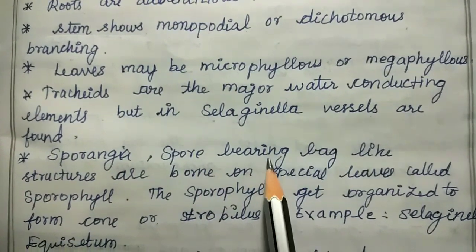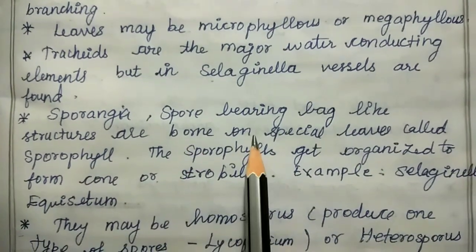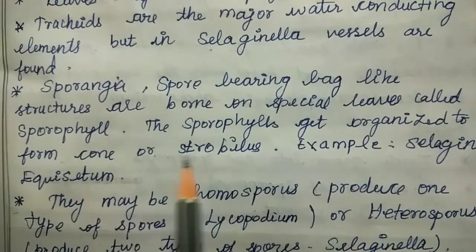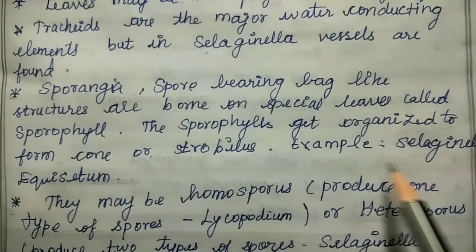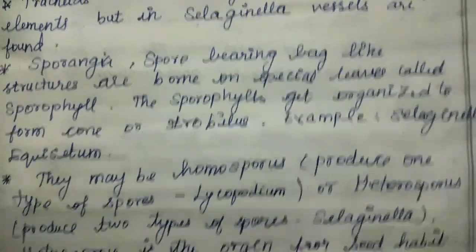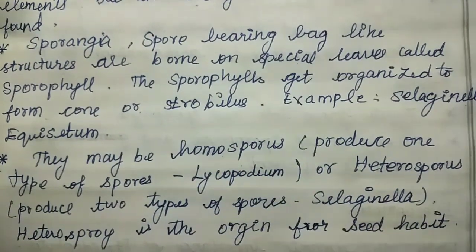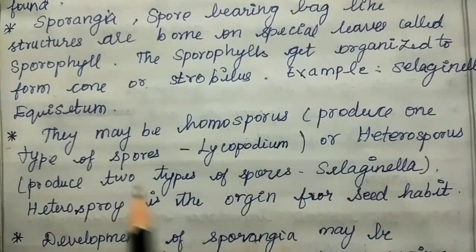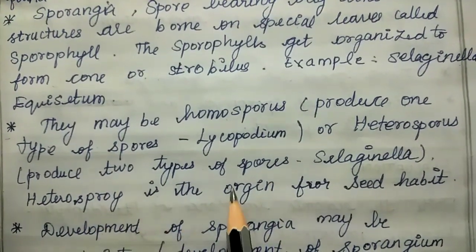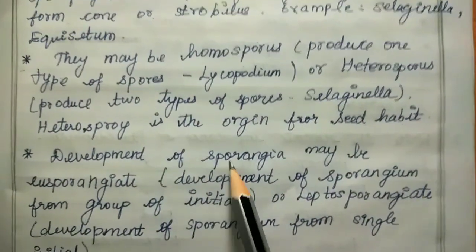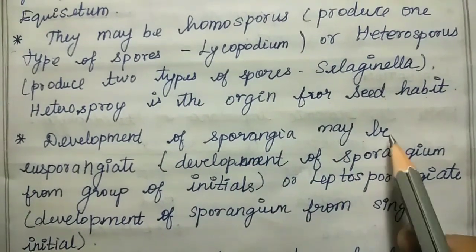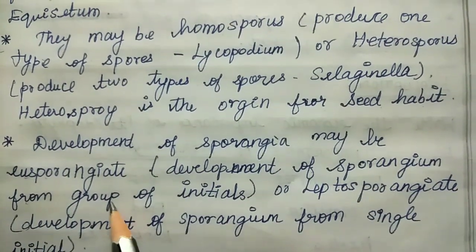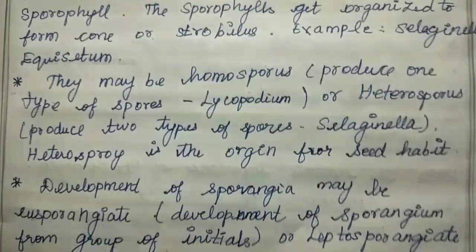They have spore-bearing bag-like structures or sporangia on special leaves called sporophylls. The sporophylls get organized to form a cone or strobilus. Example: Selaginella. They may be homosporous, producing one type of spore, or heterosporous, producing two types of spores. Heterospory is the origin for the seed habit. Development of sporangia may be eusporangiate or from a group of initials.